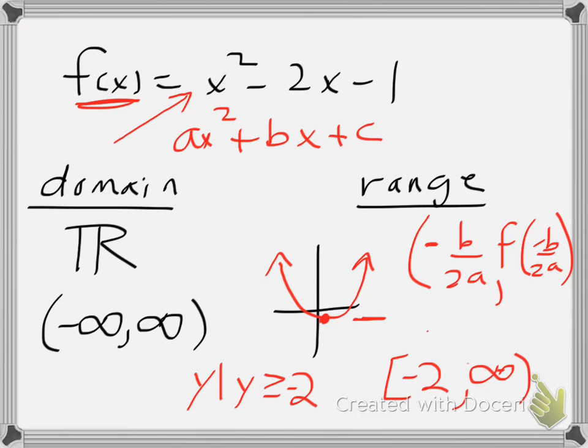So we've found our domain and range for a quadratic function, domain being all real numbers for any quadratic expression, any quadratic graph, range being identifying the maximum or minimum value, and then based on if the graph opens up or opens down, we make the appropriate interval. Thank you.